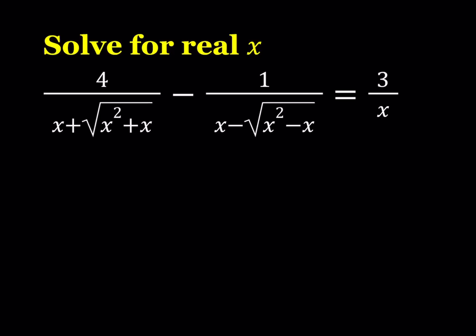Hello everyone. In this video we're going to be solving a radical equation in a very radical way. We have 4 over x plus the square root of x squared plus x, minus 1 over x minus the square root of x squared minus x, equals 3 over x. We're looking for real values of x. Let's get started.